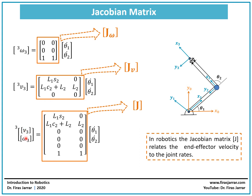The left-side column matrix contains x dot, y dot, and z dot of the end effector in frame 3, and also the angular velocity vector — a 3x1 vector containing omega x, omega y, and omega z. So on the left side, this column matrix is in fact a 6x1 matrix. On the right side, we have the joint rates theta 1 dot and theta 2 dot.